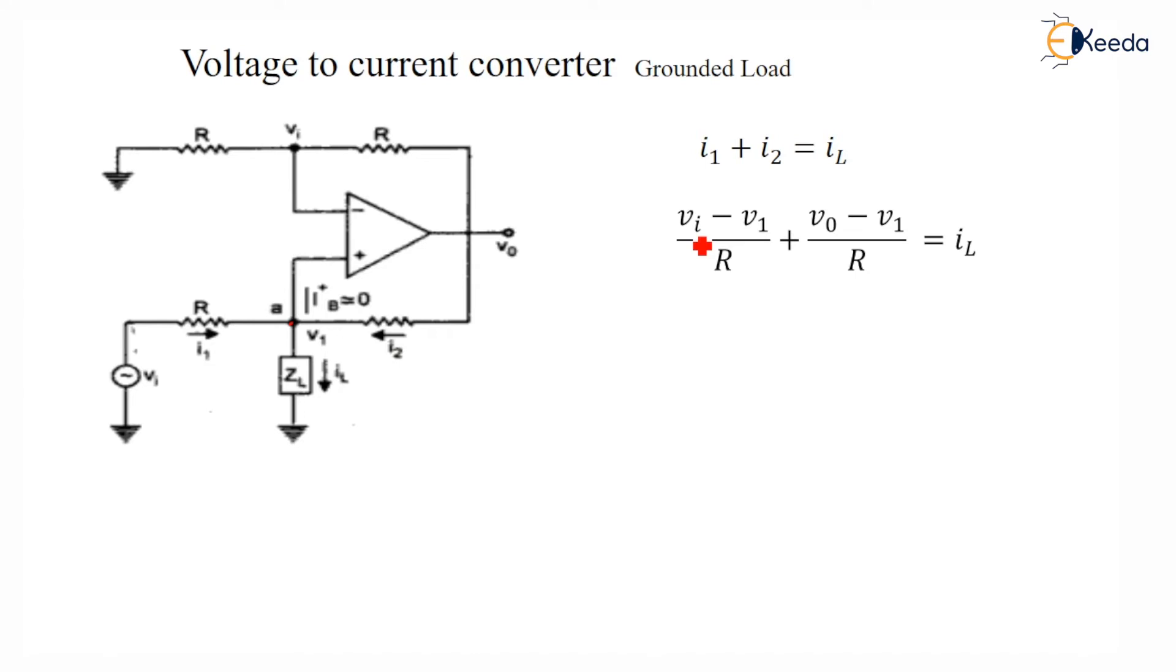So I'll substitute this equation. Now, what I'll do is I'll make V1 minus V1 and minus V1, it's a 2V1, and I'll shift this R into right side. So the equation will be like this.